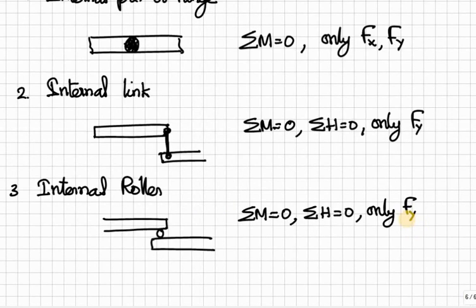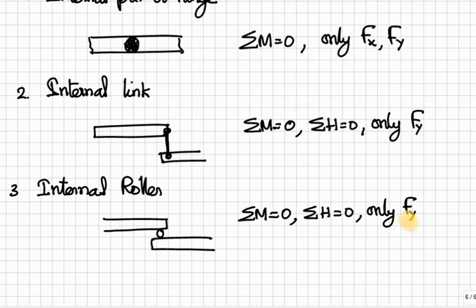The next one is internal roller. This is also similar to internal link, except instead of a rigid arm or link we have one roller. Here also there is no rotational resistance and no resistance against horizontal sliding. Therefore, we have sigma M equal to 0 and sigma H equal to 0. But it will resist the perpendicular force, so it will have only FY - the vertical reaction.